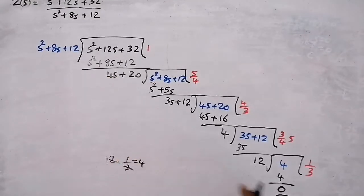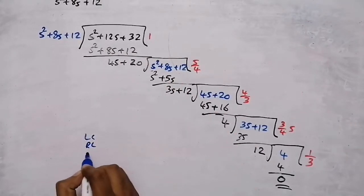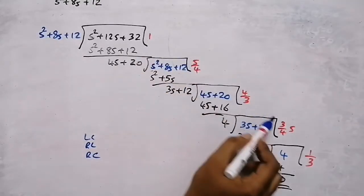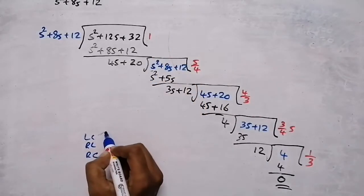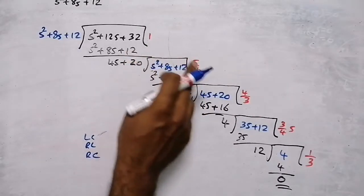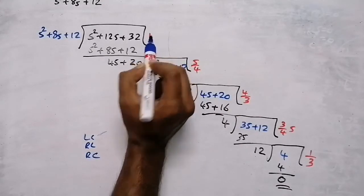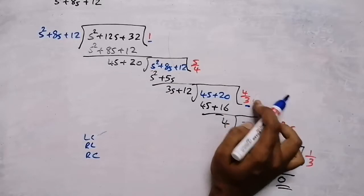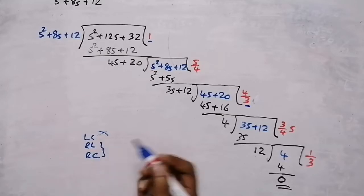Now we need to check which type of network this is — LC, RL, or RC. If in each quotient step there is an s-term, it will be an LC circuit. But here there is no s-term; there are only constant numbers. So it is not an LC circuit — it will be either RL or RC.